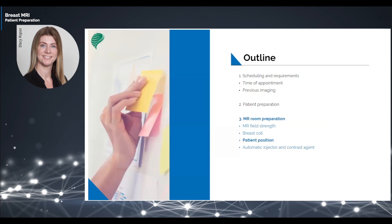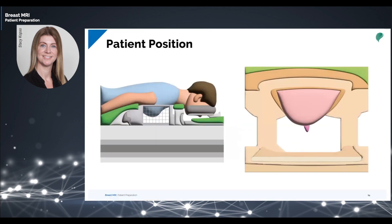To position the patient on the MRI table, the patient lies prone and the breasts are placed in the middle of the designated slots in the breast coil. The radiologic technologist provides the patient with a protective headset or earplugs and a buzzer in case the patient needs to signal for any assistance. The automatic contrast injector should be connected to the patient's IV line for the dynamic scan later.